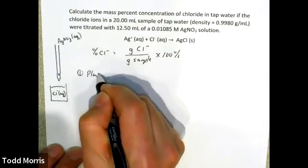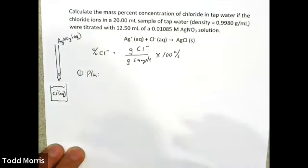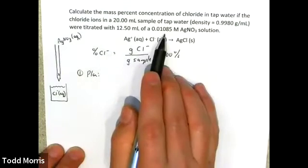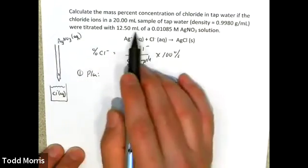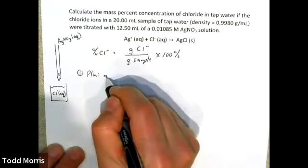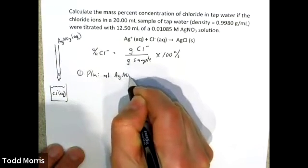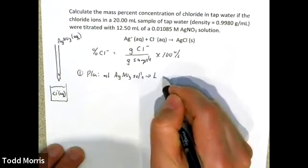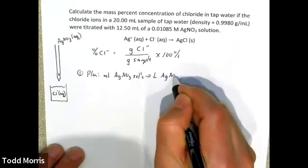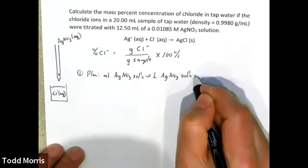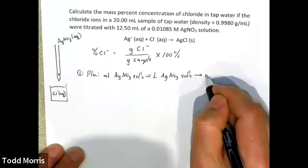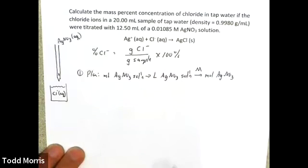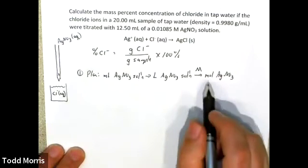The first part of the plan is to take the information given and find grams of chloride. The other information I'm given is the volume and concentration of the titrant solution. I'll start with milliliters of silver nitrate, convert that to liters of silver nitrate solution, and then convert that number into moles of silver nitrate using molarity — that's why I need to convert from milliliters to liters.